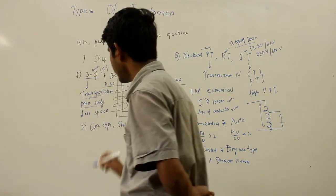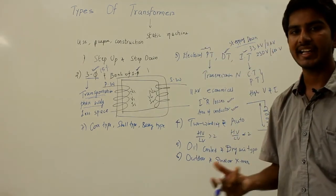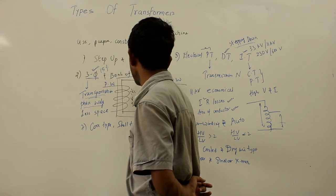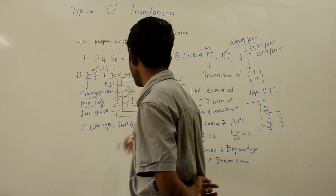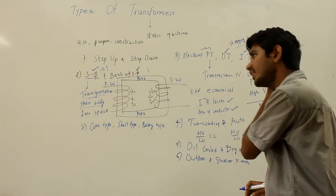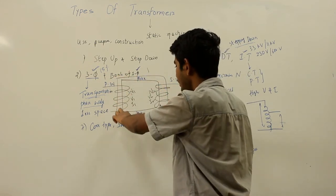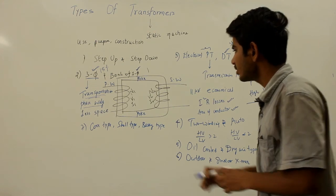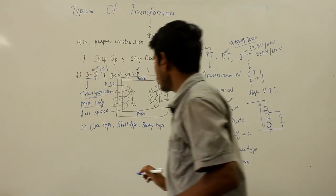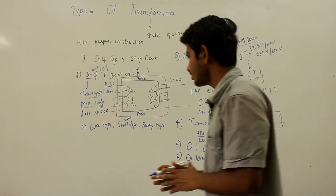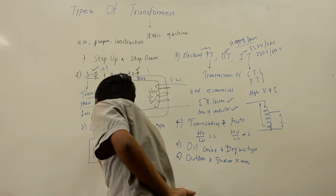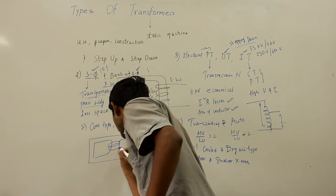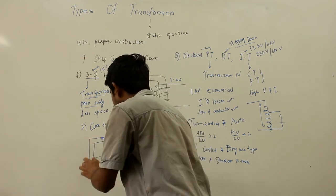The next type, based on construction, includes core type, shell type, and berry type transformers. The core type transformer has two vertical legs or limbs and two horizontal sections called yokes. The core is rectangular in shape with a common magnetic circuit, and cylindrical coils — both HV and LV — are placed on both limbs. The shell type transformer has a central limb with two outer limbs, and the HV and LV coils are placed on the central limb, providing a double magnetic circuit path.